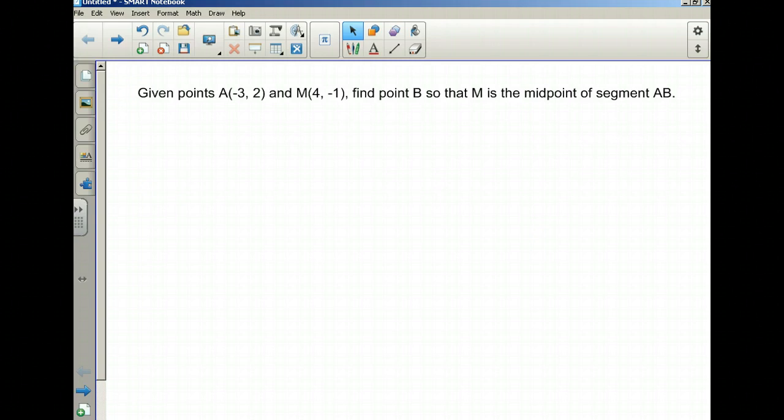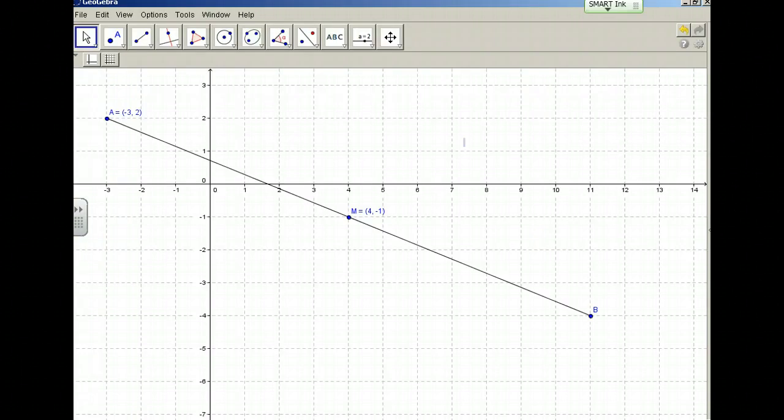For visualization, I have used GeoGebra, a software program that you'll learn more about, to input those points: A at (-3, 2) and M at the midpoint (4, -1). You can see here what we're trying to find is point B—what are the coordinates of this point?